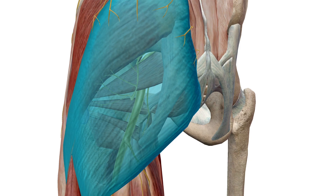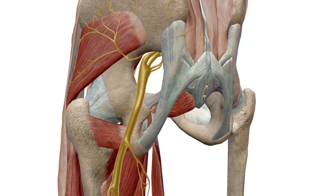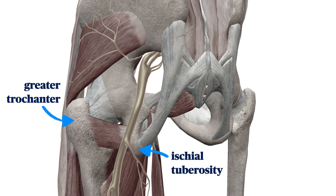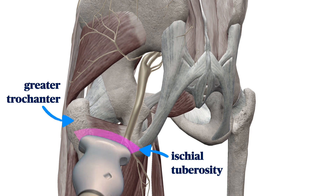A convenient place to block the sciatic is in the proximal posterior thigh, where it has a consistent relationship with the bony anatomy. At this level, the nerve is deep to the gluteus maximus muscle and superficial to the small quadratus femoris muscle, which is slung like a hammock between the greater trochanter of the femur and the ischial tuberosity. These two bony prominences are important surface landmarks for the subgluteal sciatic nerve block, and we're going to place our ultrasound probe right between these to catch the nerve as it passes through the middle.